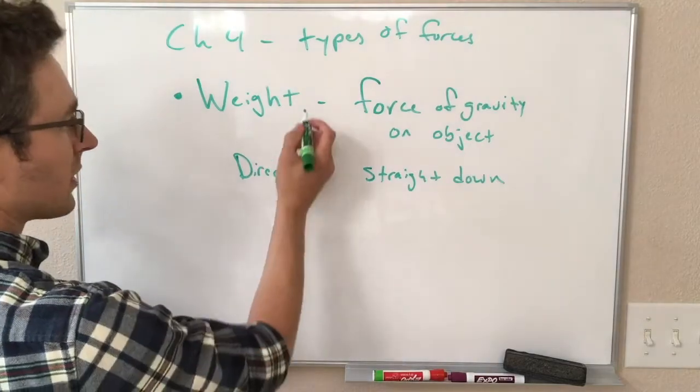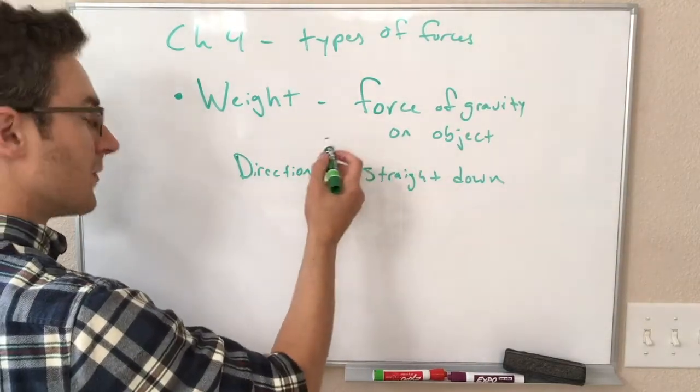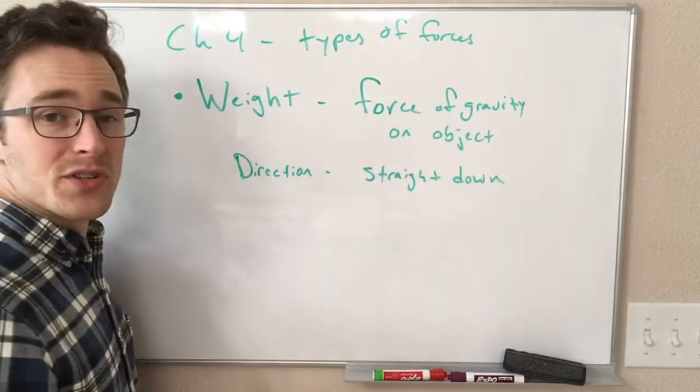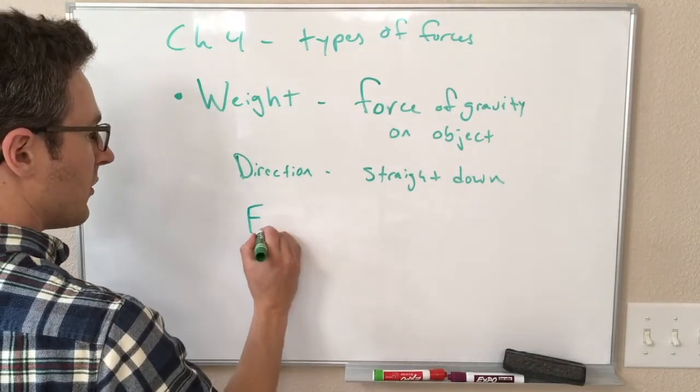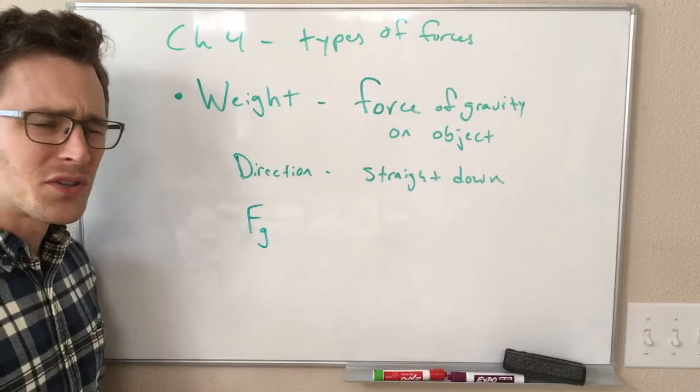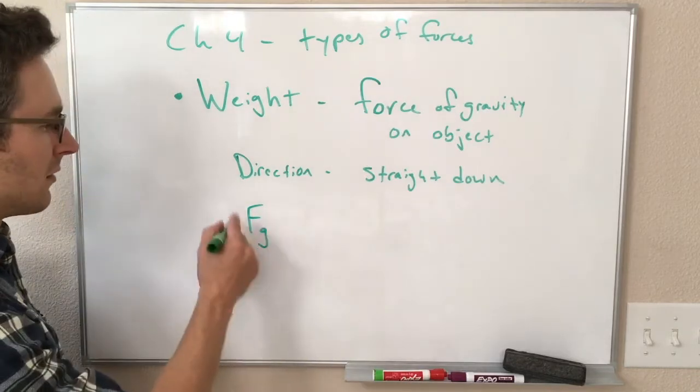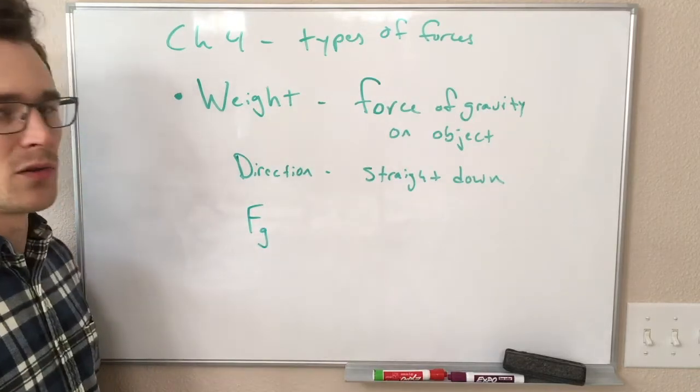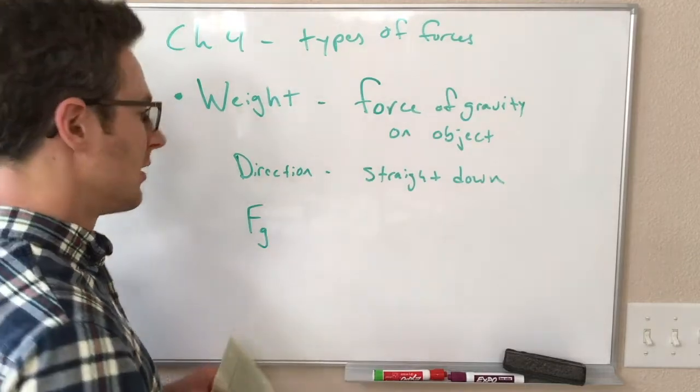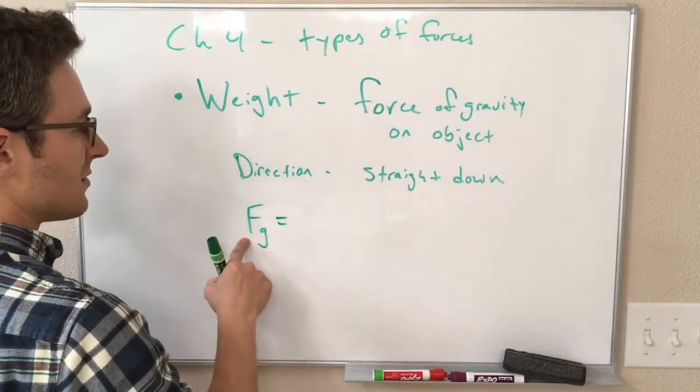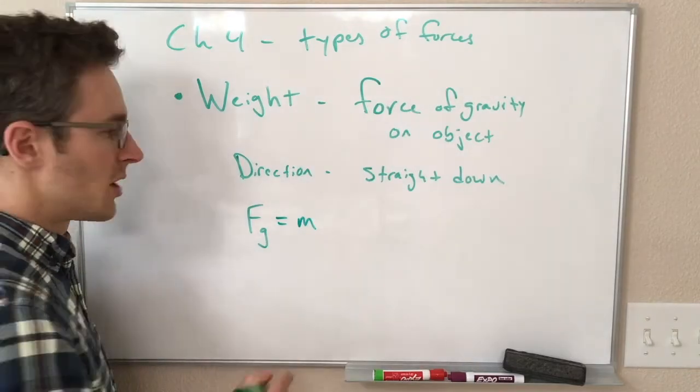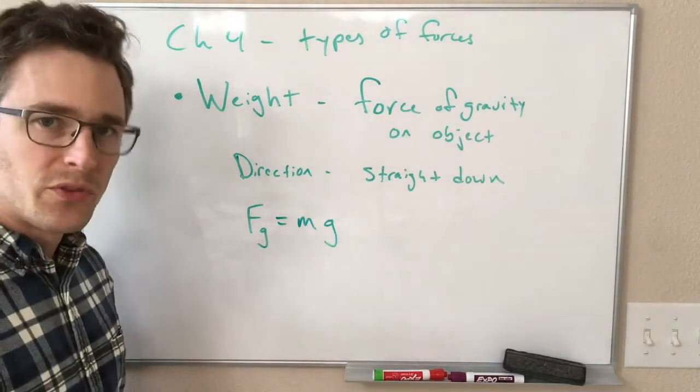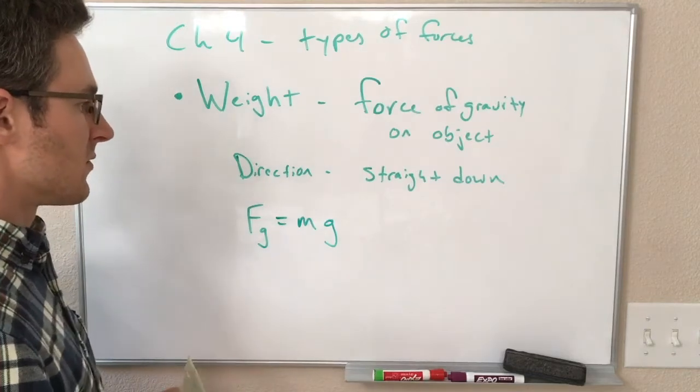If we're in more complicated situations, like where we're orbiting around the Earth, the direction of the weight of an object is towards the center of the Earth, but if we're just on Earth's surface, the center of the Earth is somewhere down below, so the force we feel is straight down. The magnitude of the weight, the force of gravity on the object, we're going to use F with a G subscript.